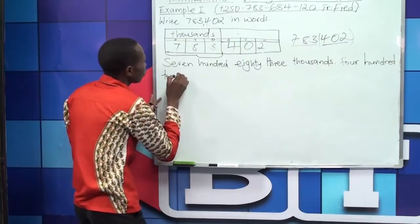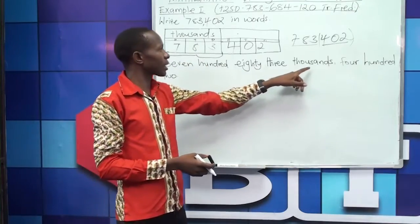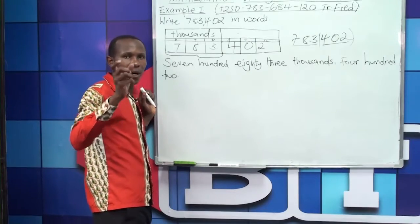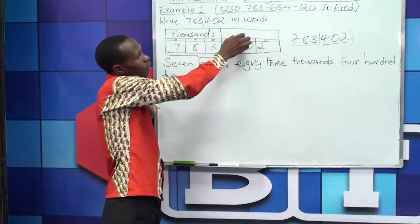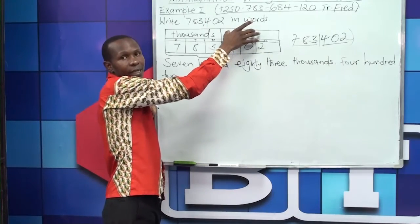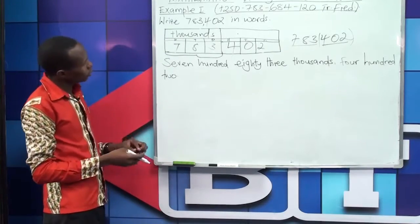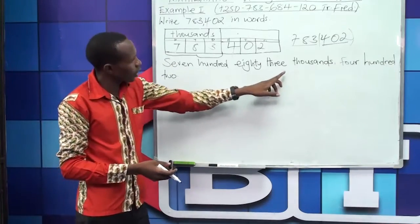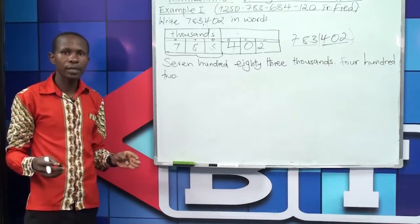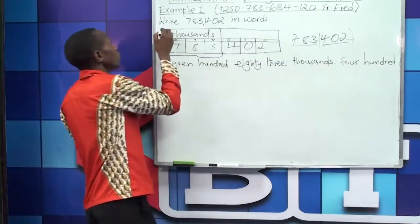That means I now have seven hundred eighty-three thousand, four hundred two. This section is always identified with the word 'units,' and in most cases we put a full stop, meaning that after writing what is in that box you add it to complete the statement. So the final answer for Method 1 is: seven hundred eighty-three thousand, four hundred two. That is how we read this number in words.